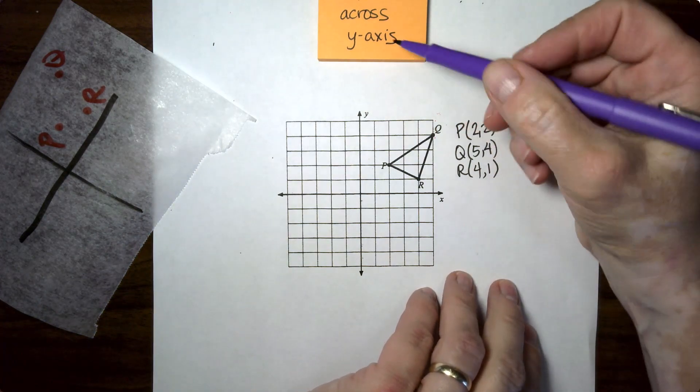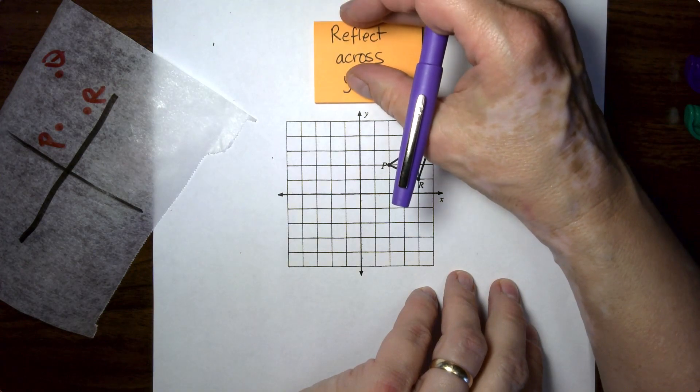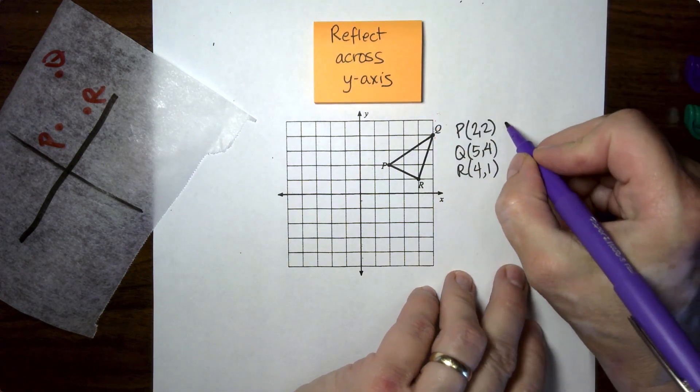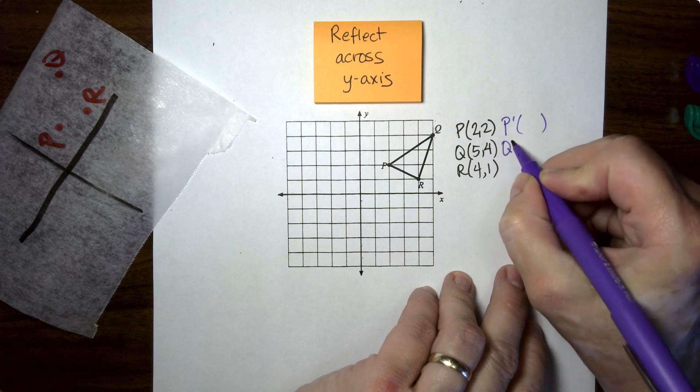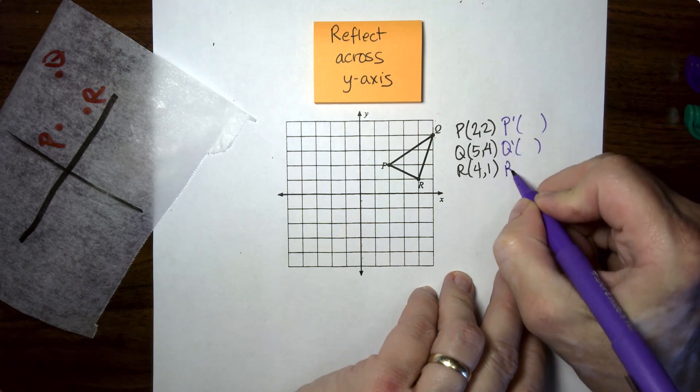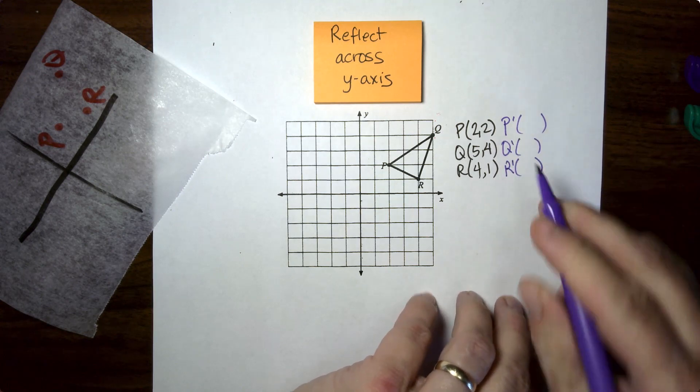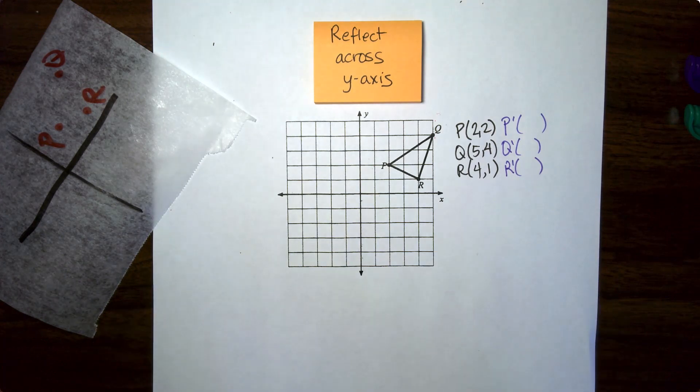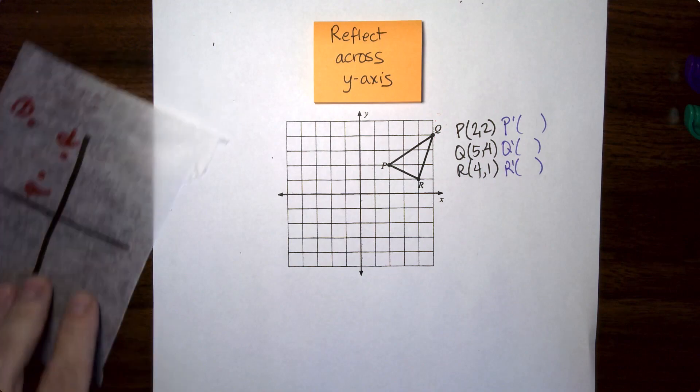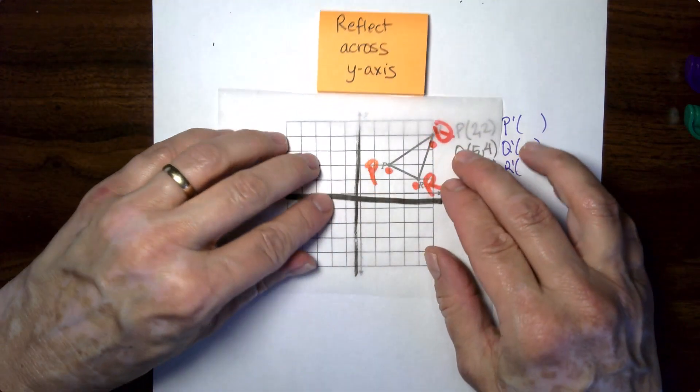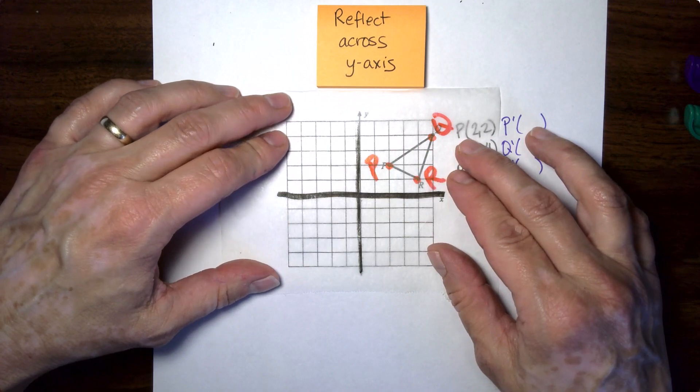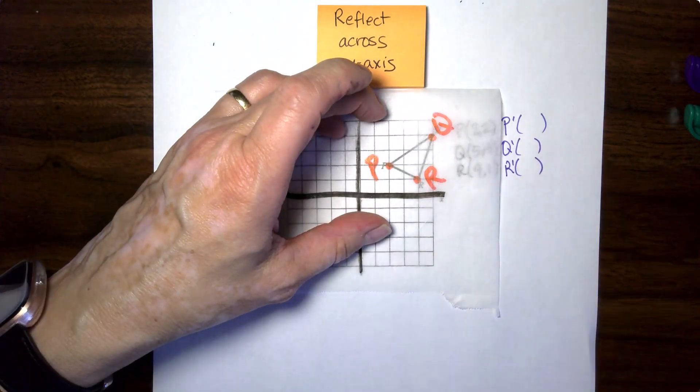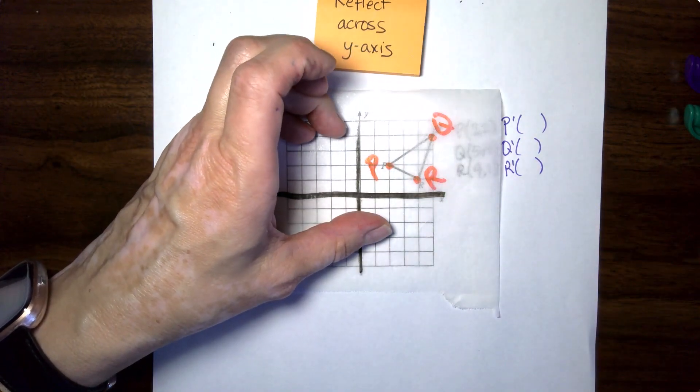So we'll do that for this first one. Reflect across the y-axis. We're going to get new points. P prime, Q prime, and R prime. And that's how we do it. They're like images of the first point. We use the same letters and we put the little apostrophe on there. That's what that means. Alright. So here's our little triangle and those are the points. We're going to reflect across the y-axis.